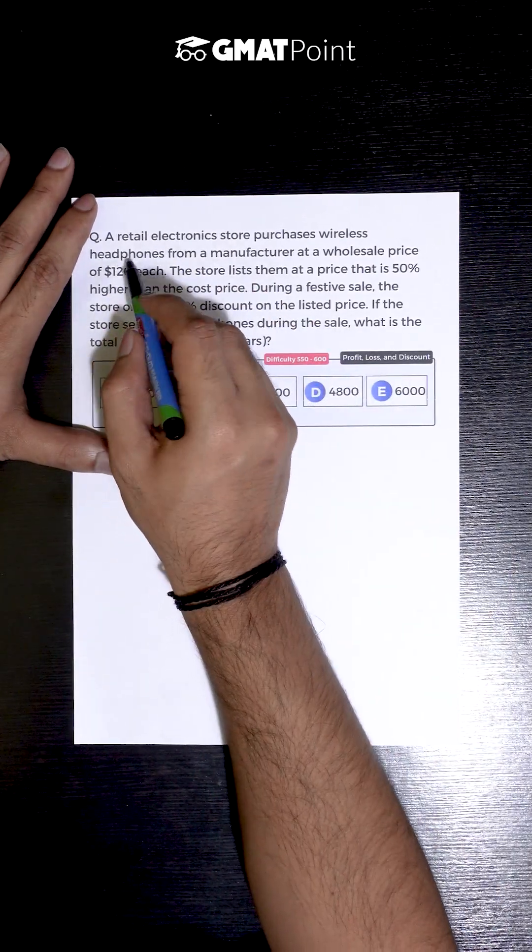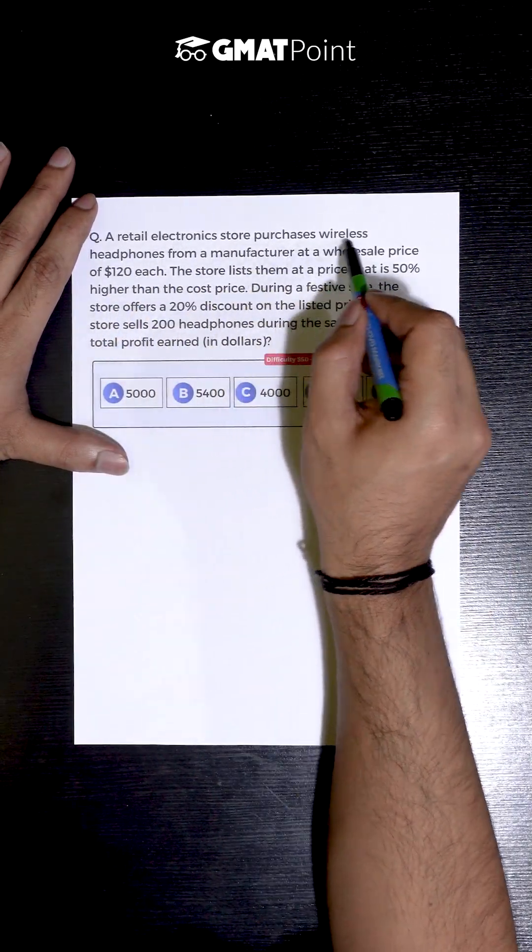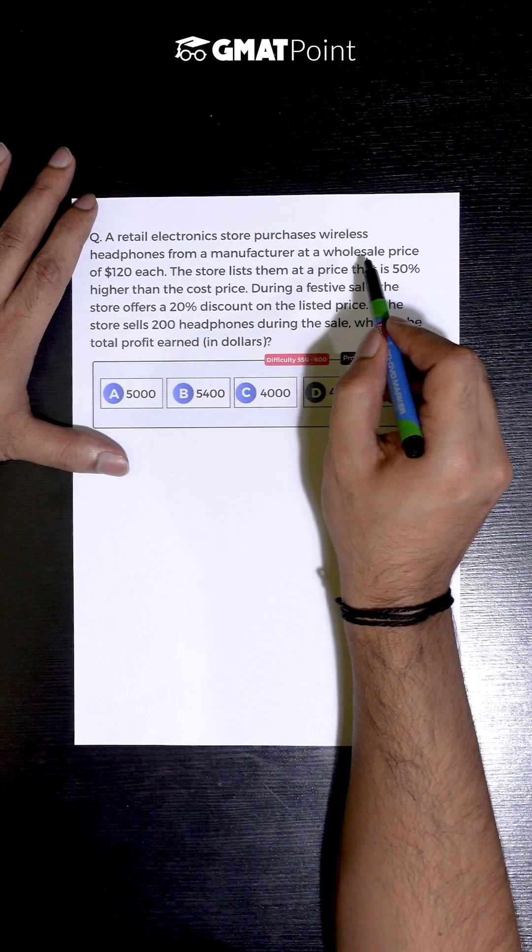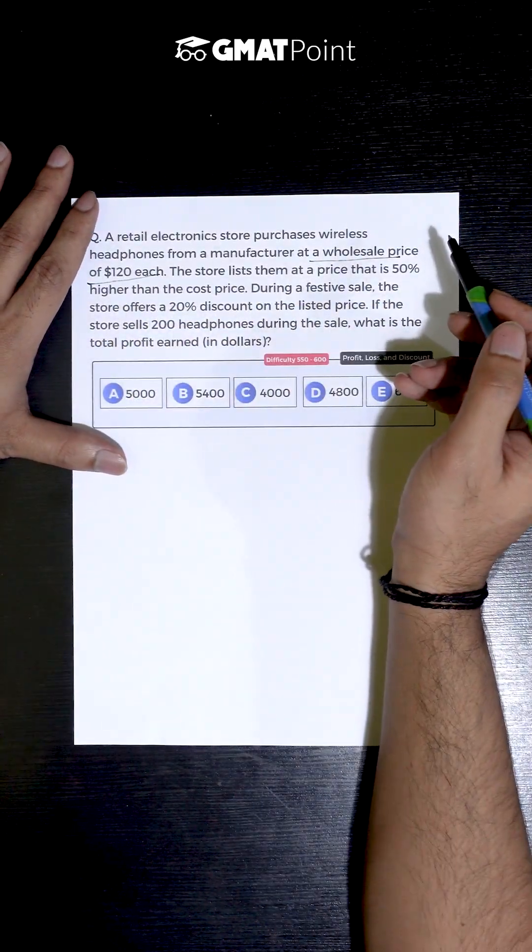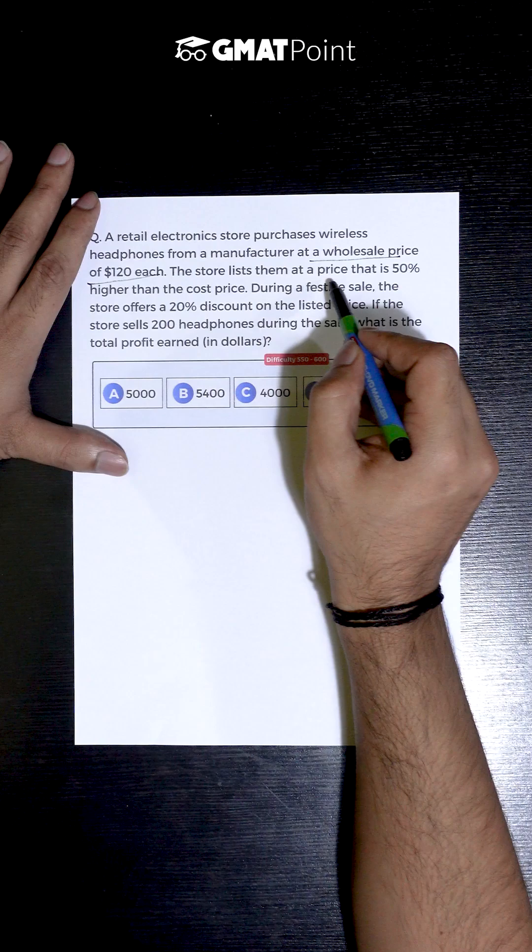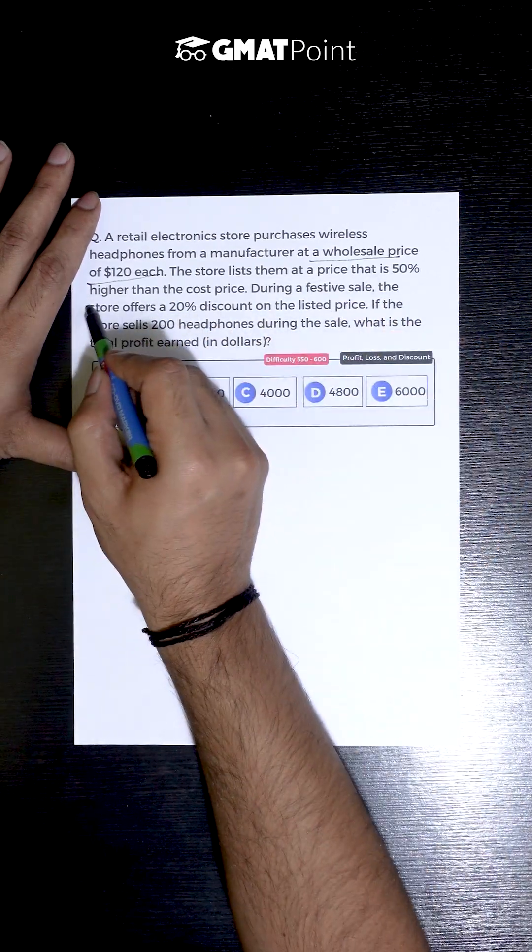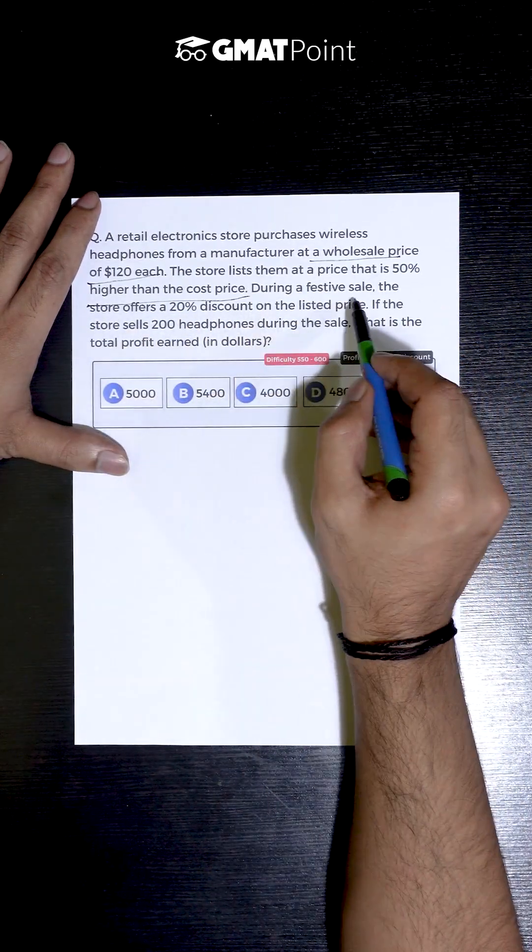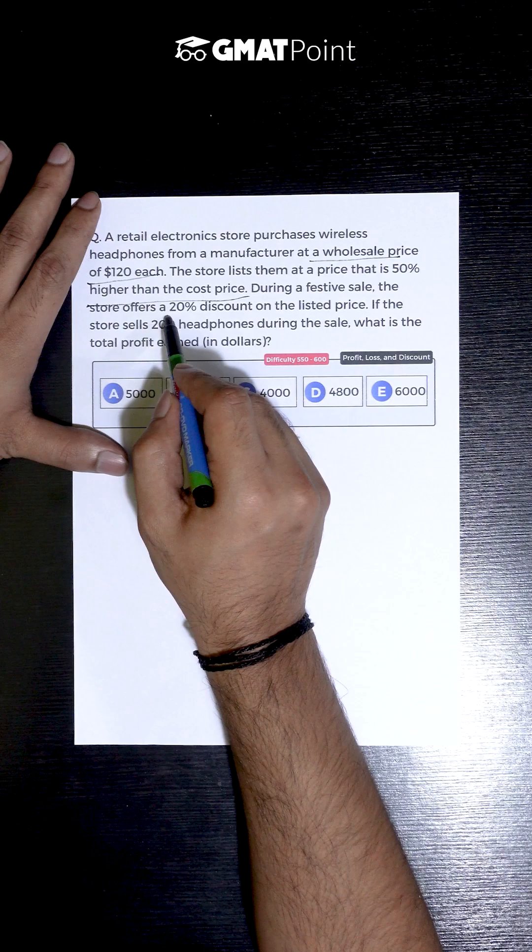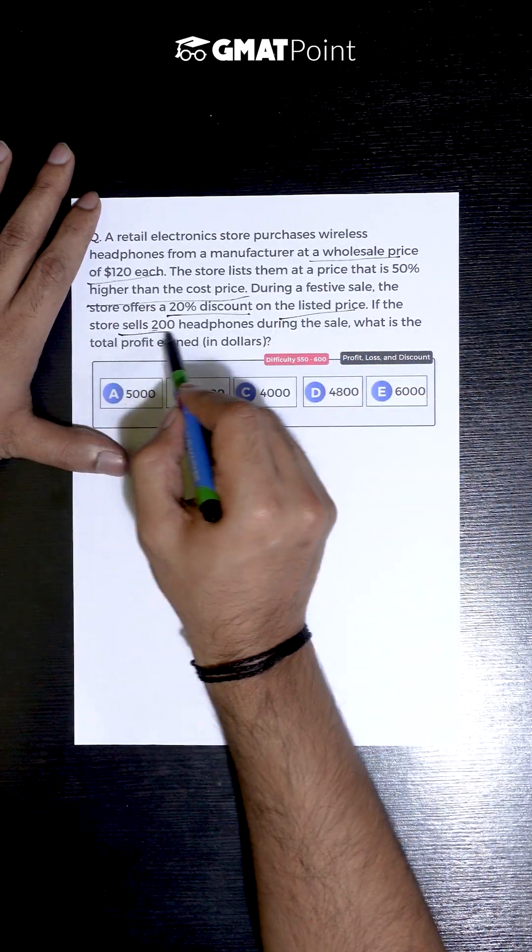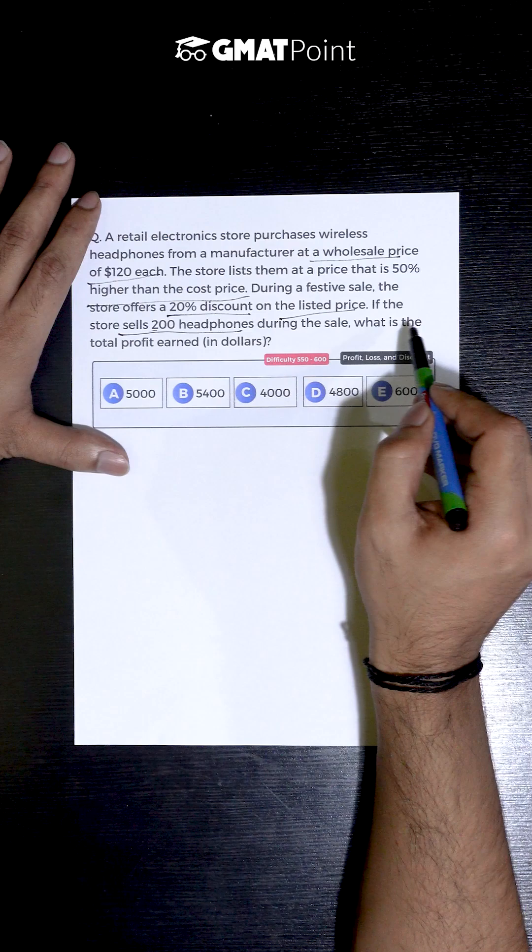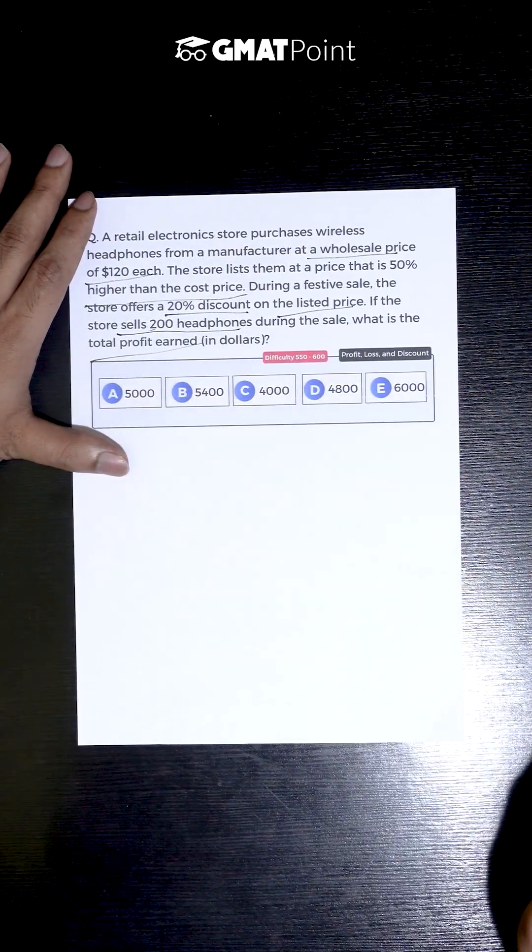Let us see how to solve this question. A retail electronic store purchases wireless headphones from a manufacturer at a wholesale price of $120 each. The store lists them at a price that is 50% higher than the cost price. During a festive sale, the store offers a 20% discount on the listed price. If the store sells 200 headphones during the sale, what is the total profit?